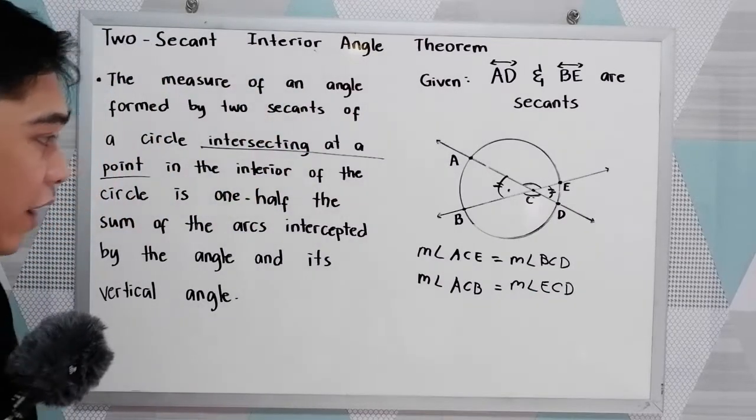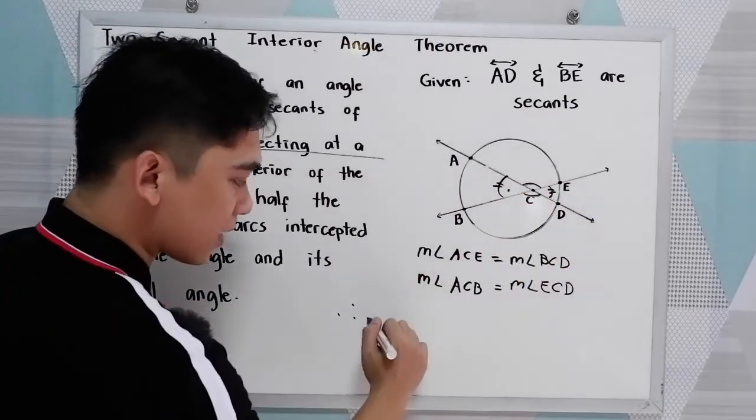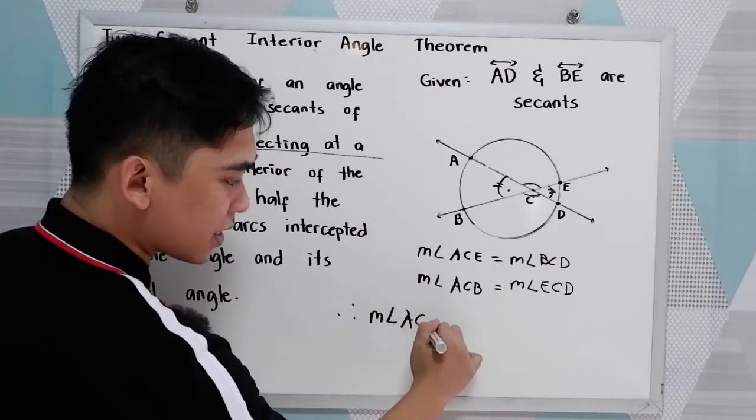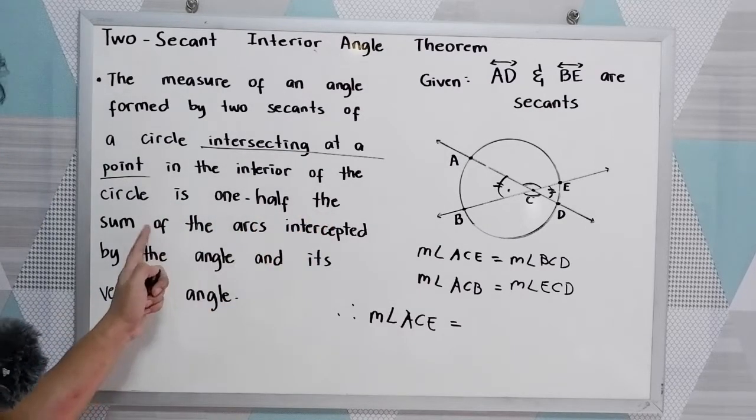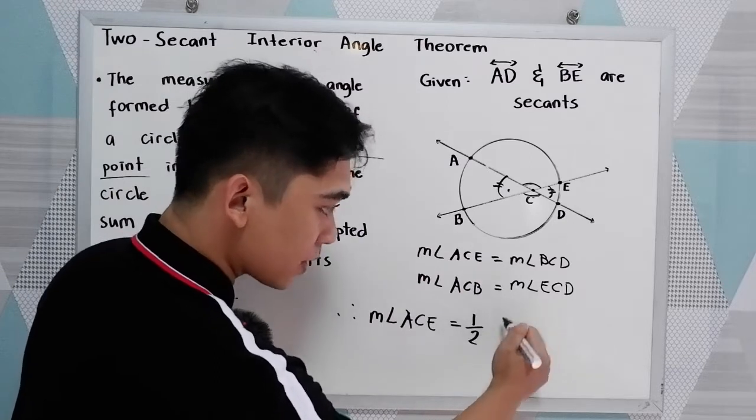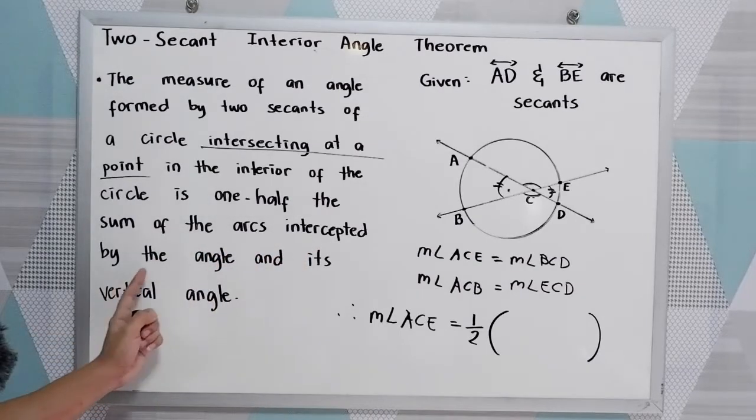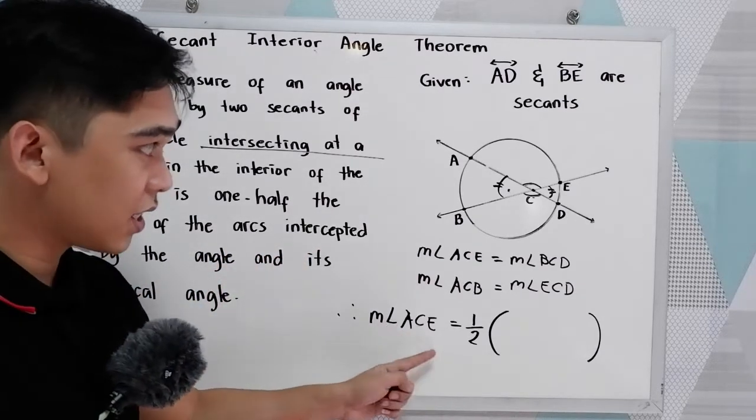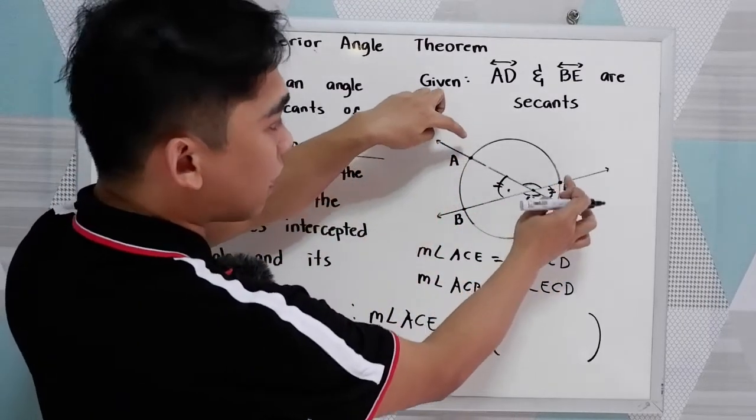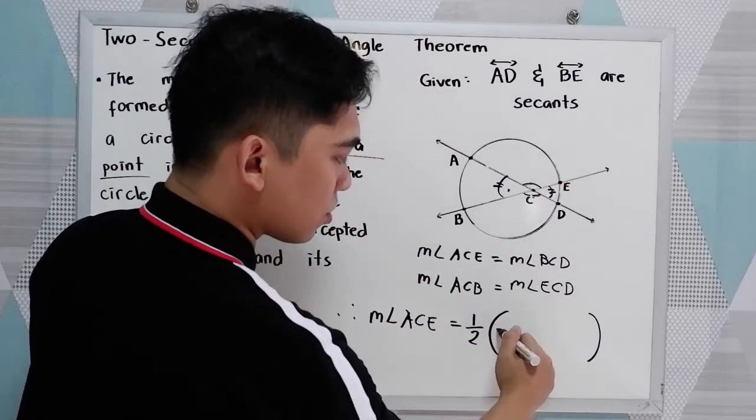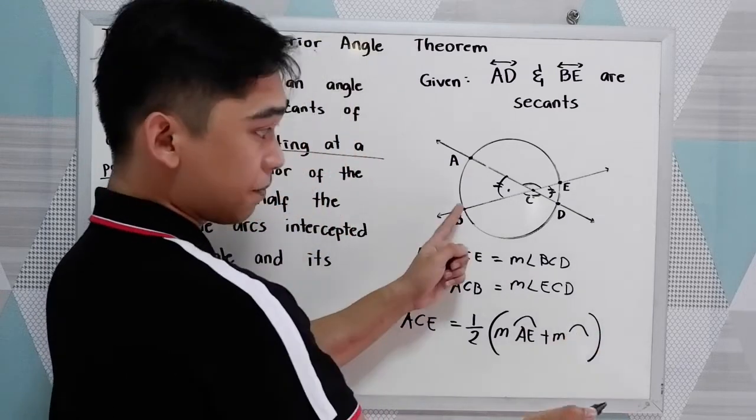Now, for our conclusion, to get the measure of the angle, let's say measure angle ACE, that is equal to one-half the sum of the arcs intercepted by the angle. So ACE, where is ACE? So our arc AE, so measure of arc AE, plus the measure of arc BD.